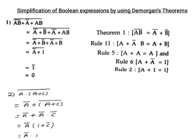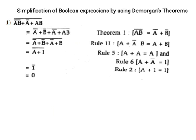Now for examples: simplification of Boolean expressions by using De Morgan's theorem. Example 1: A B complement plus A complement plus A complement plus A B whole complement. That equals A complement plus B complement plus A complement plus A B whole complement, because A B complement equals A complement plus B complement.